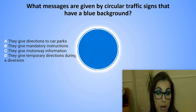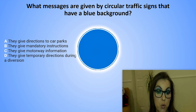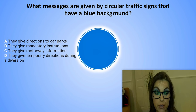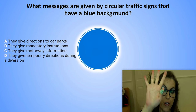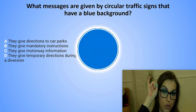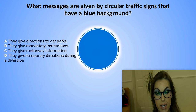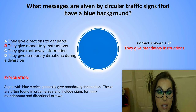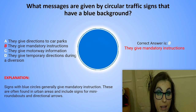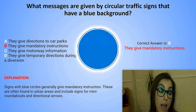What messages are given by circular traffic signs that have a blue background? A. They give directions to car parts. B. They give mandatory instructions. C. They give motorway information. Or D. They give temporary directions during a diversion. The correct answer is B. They give mandatory instructions. Explanation: Signs with blue circles generally give mandatory instructions. These are often found in urban areas and include signs for mini roundabouts and directional arrows.